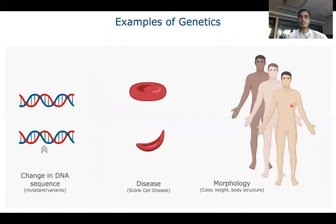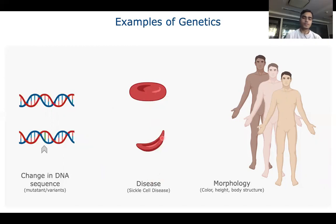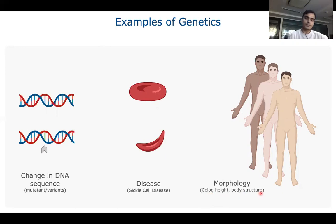As an example of genetics: when we have any change in our DNA molecule, this may be called a mutation or variation. This may lead to drastic changes — for instance in sickle cell disease, a wild type presents healthy biconcave RBCs, but in the mutant we see sickle or abnormal RBCs leading to a disease phenotype. This was the result of just one nucleotide change. There are also multifactorial, multi-gene regulated outcomes — like color, height, or body structure — which are also part of genetics.